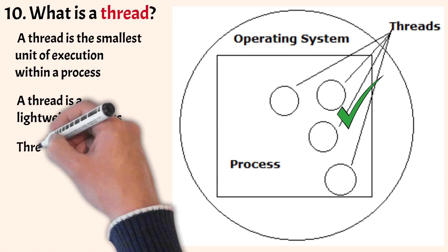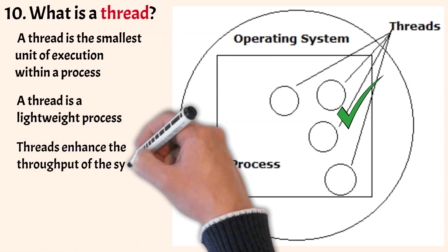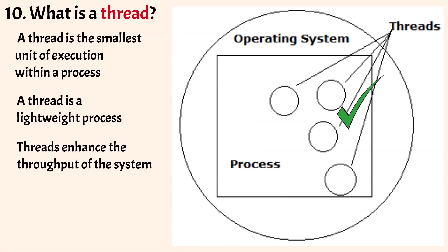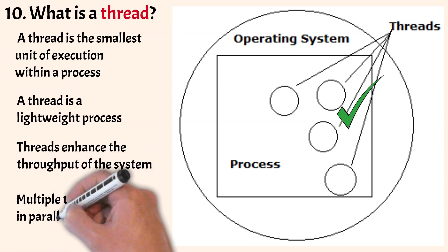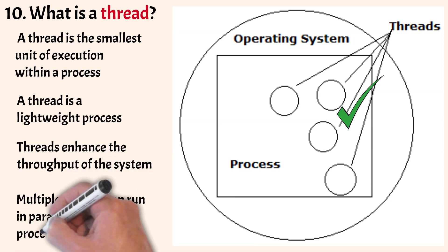Threads enhance the throughput of the system because when a process is split into threads, each thread's function is considered one job, increasing the number of jobs done per unit time. In a multiprocessor environment, threads can be distributed over multiple processors and run in parallel.